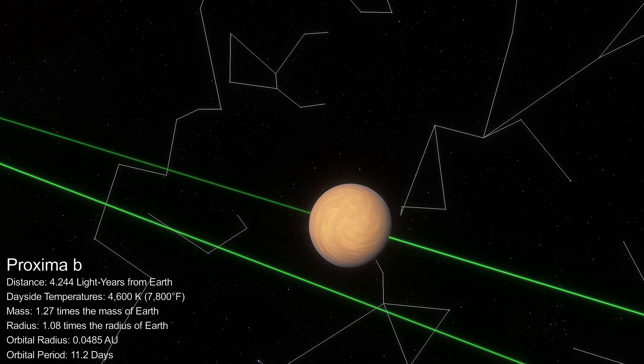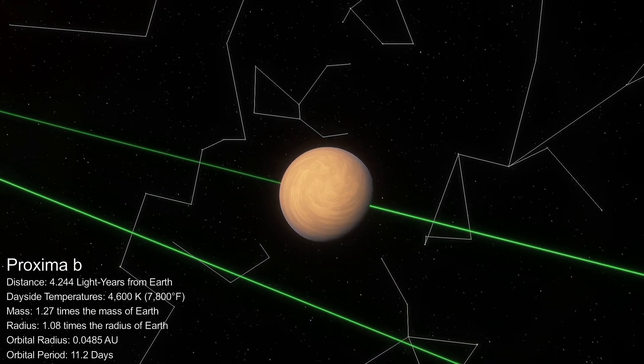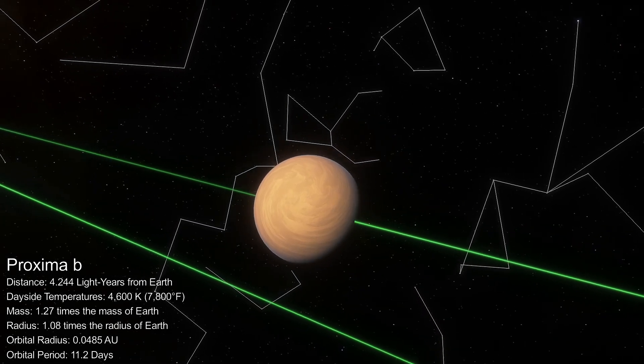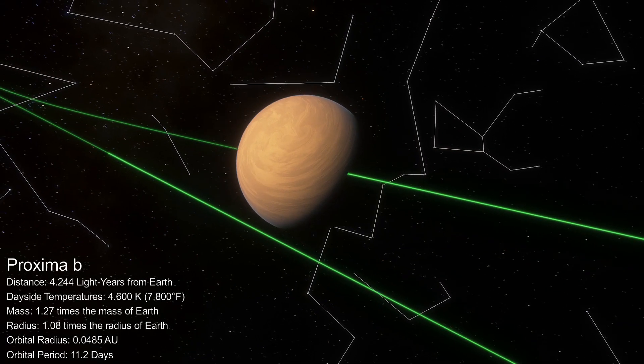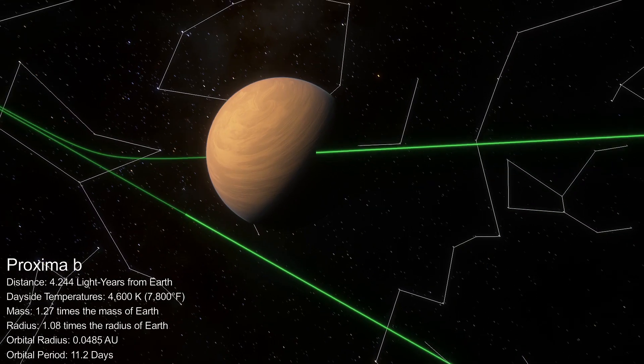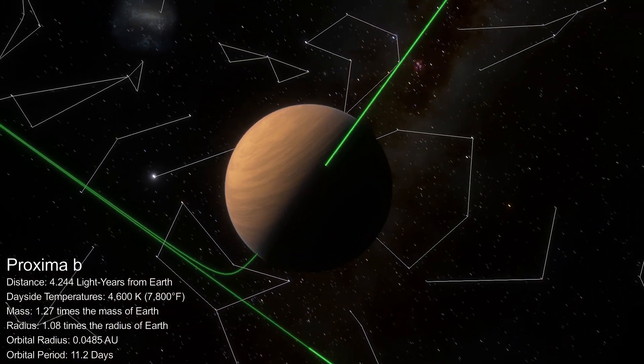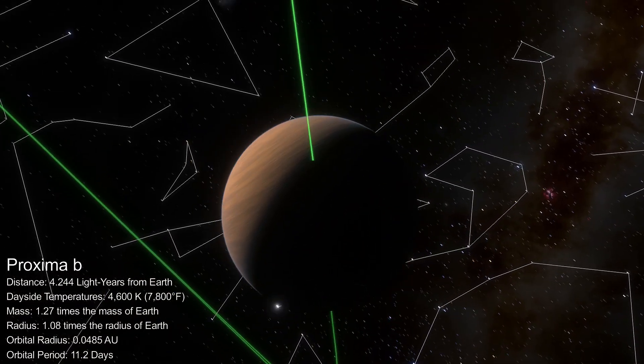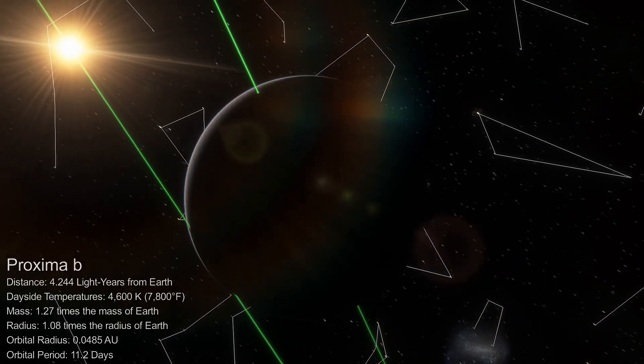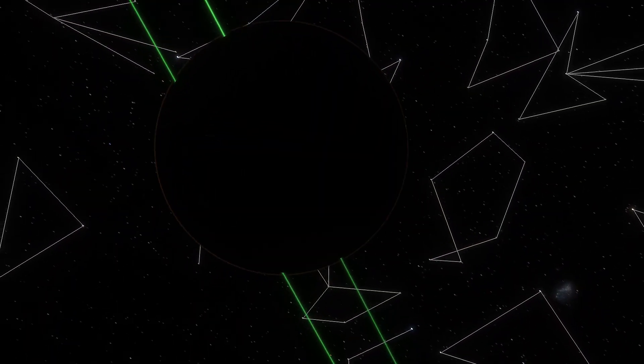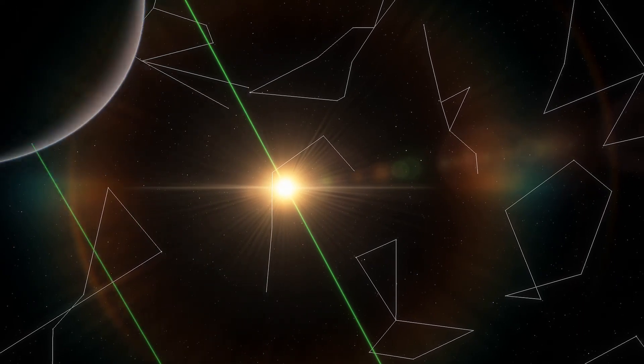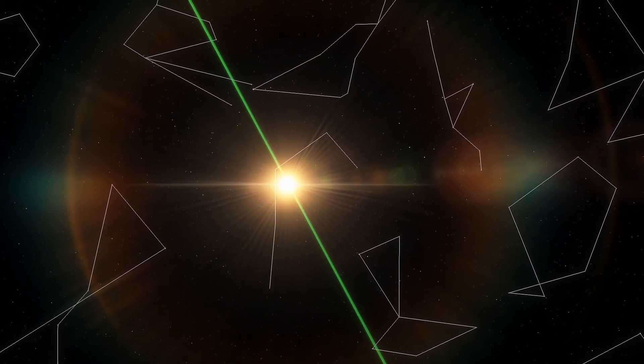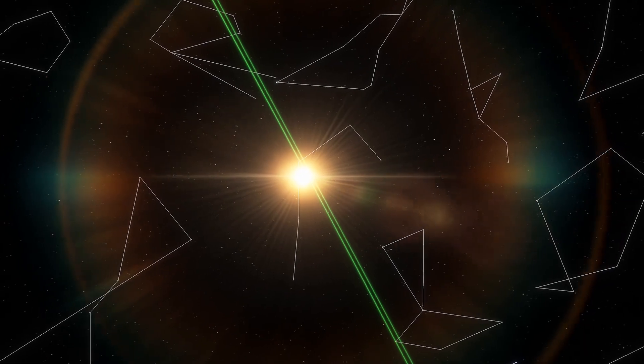This is Proxima b, a planet orbiting the nearest star to the Sun, Proxima Centauri. There is evidence of potentially another planet in this system, but Proxima b is of particular note because it is in the habitable zone of Proxima Centauri. As with TRAPPIST-1, Proxima Centauri is a red dwarf star, which is much less massive and much cooler than the Sun. This makes the habitable zone of stars like these very near the stars themselves.